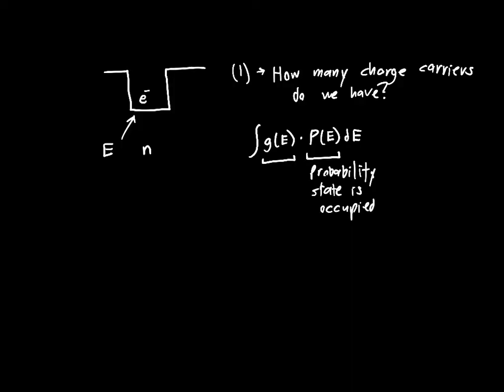And if we have those two pieces of information, the density of states and the probability that those states are occupied, then if we integrate that over the entire energy, whatever that is for our system, then we can figure out the total number of electrons that we have available n.